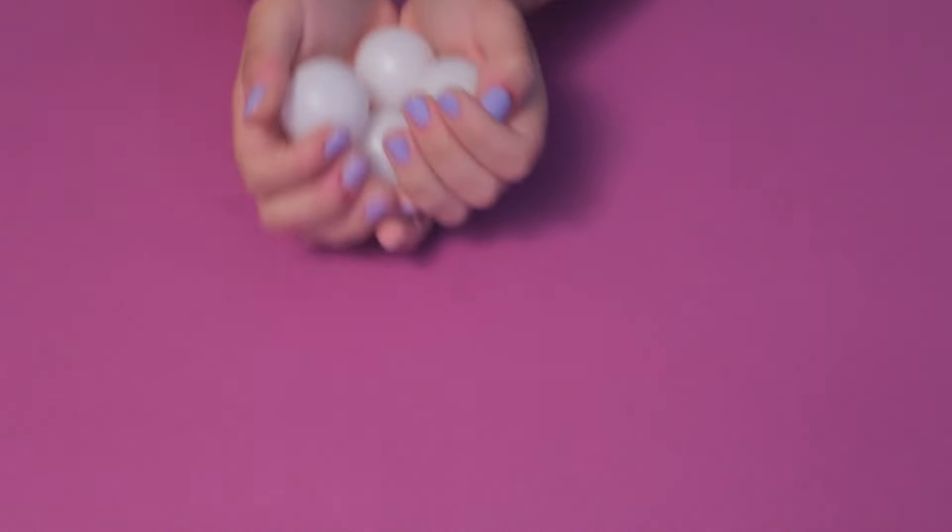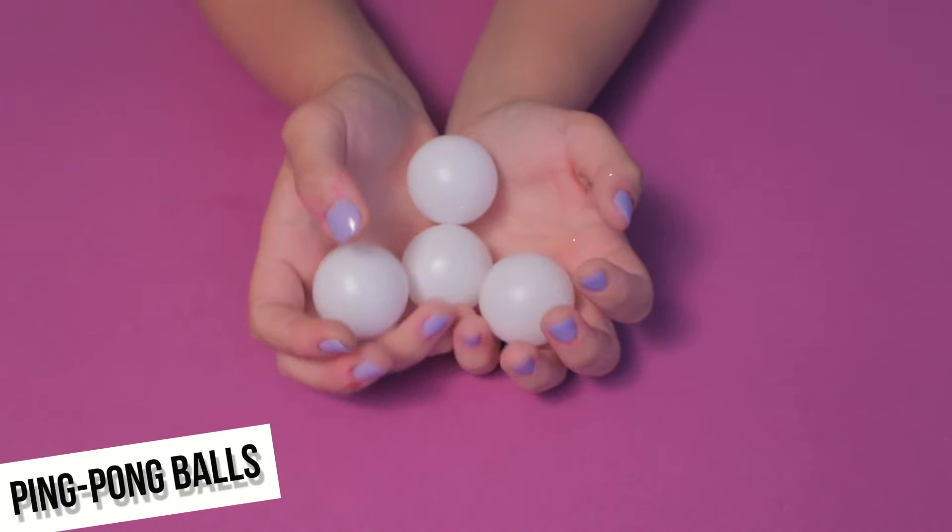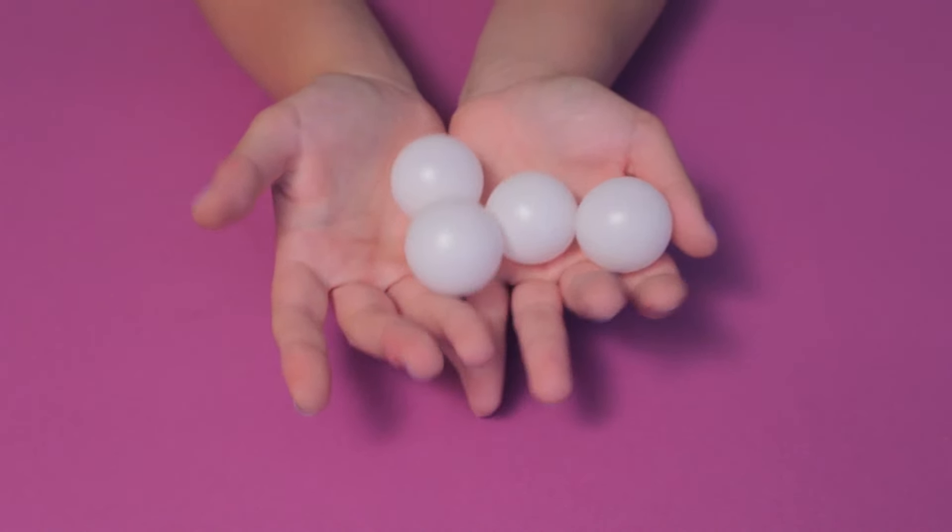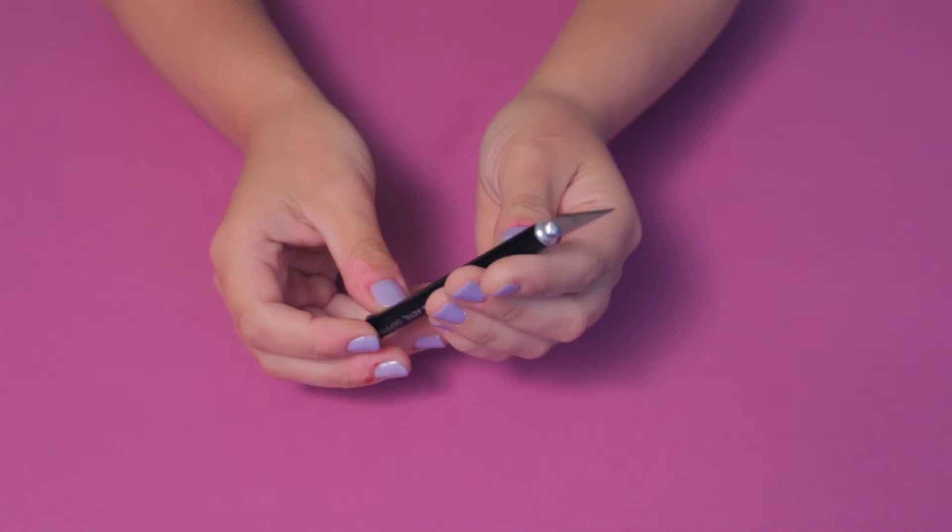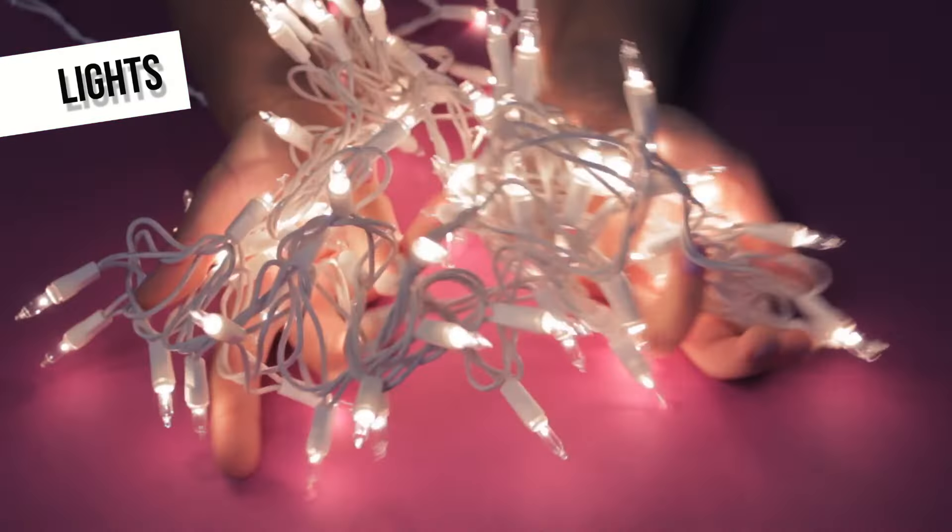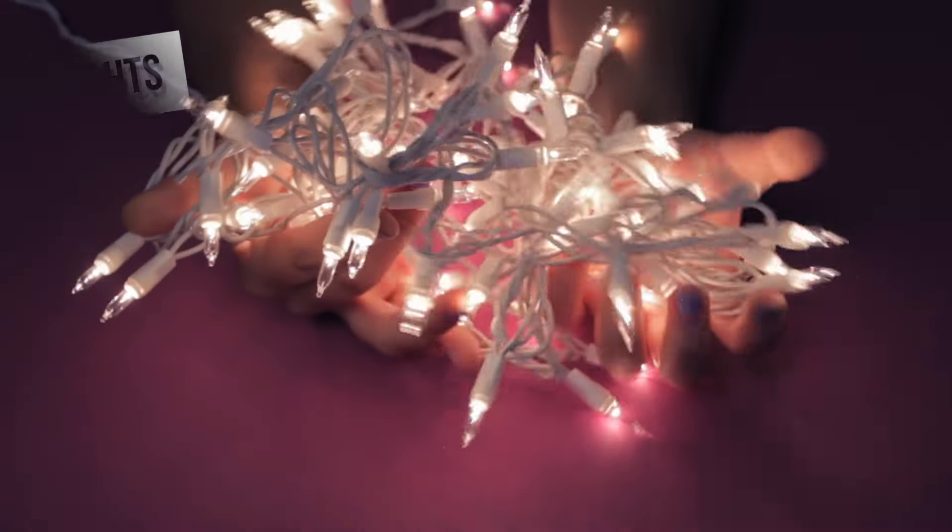Hey friends! For this quick and easy DIY, you're going to need about 140 ping pong balls, an exacto knife, and lights. The reason why you need 140 ping pong balls is because the lights come with 140 bulbs on them.